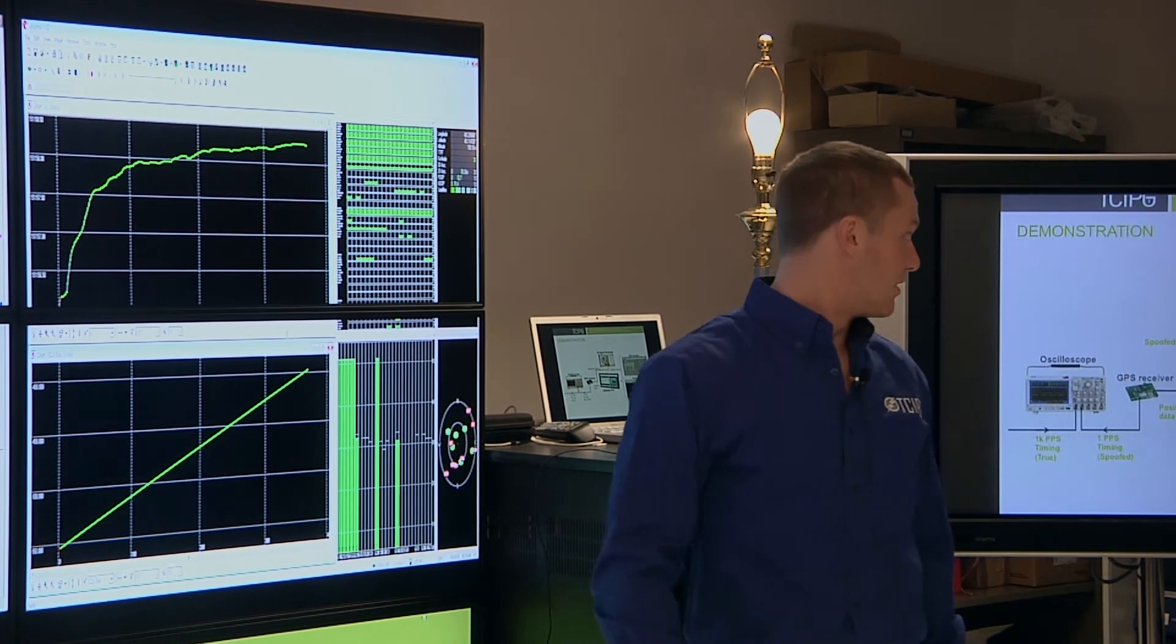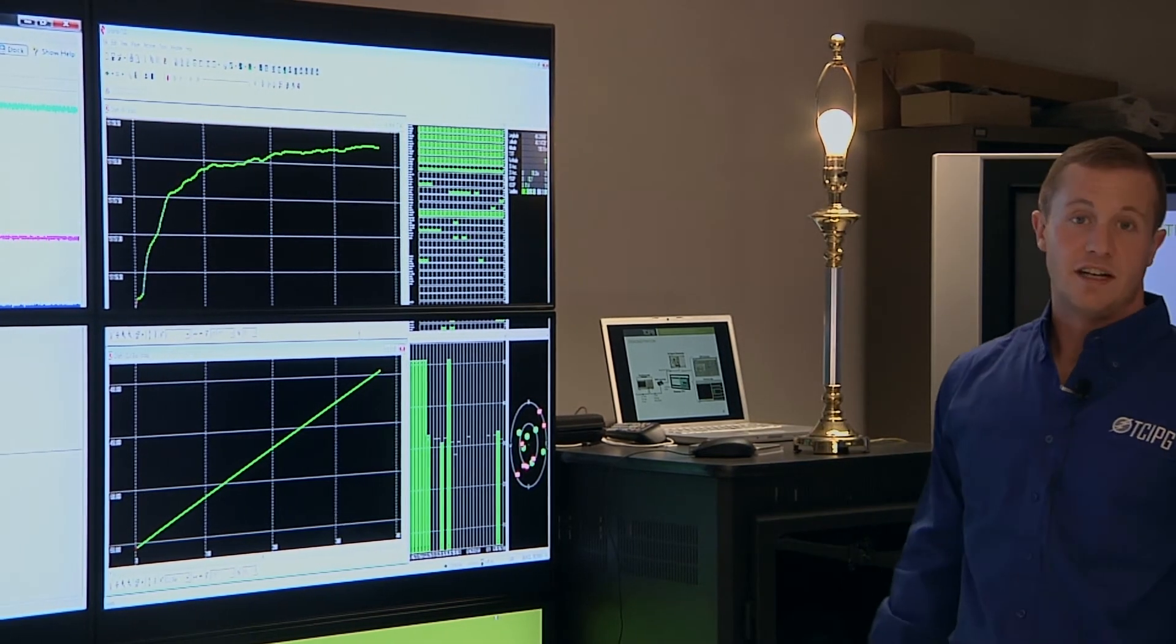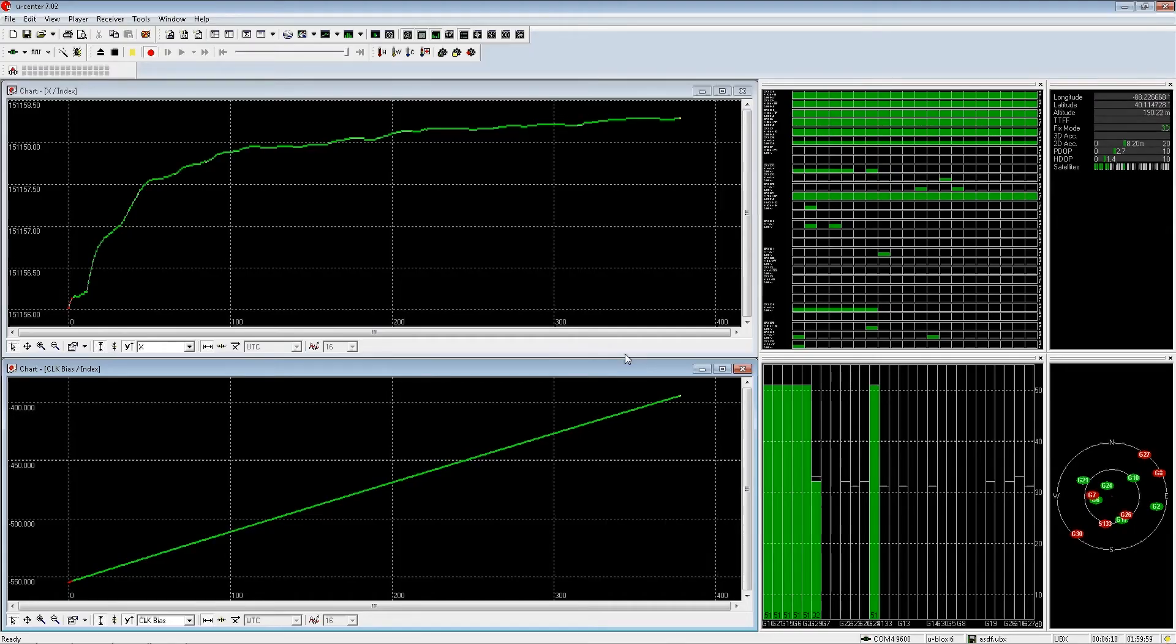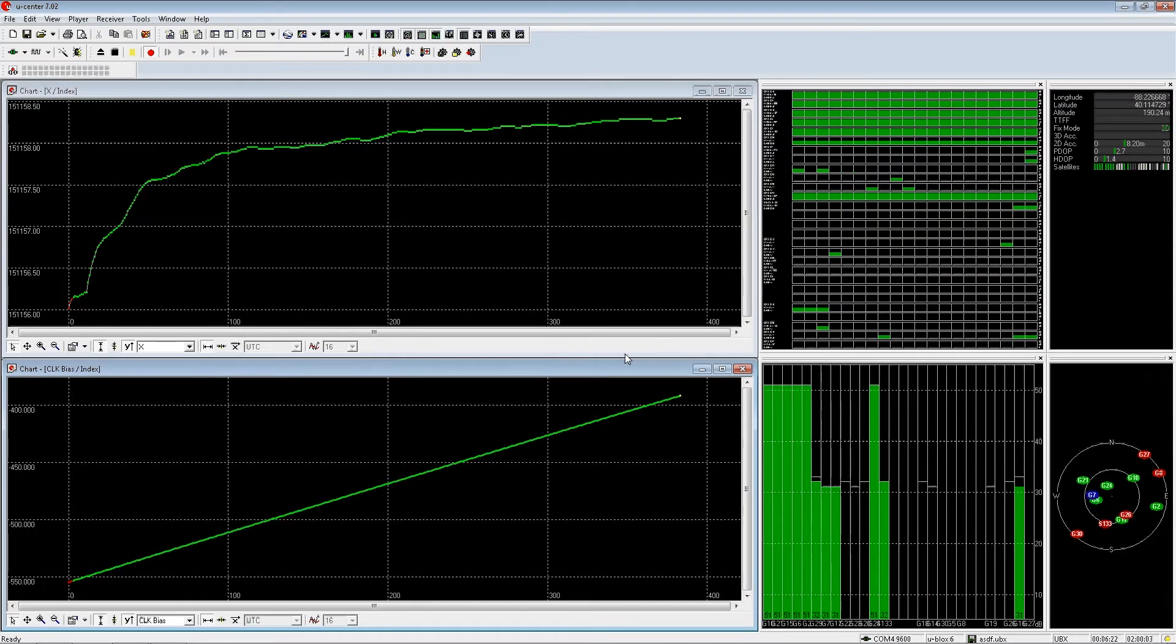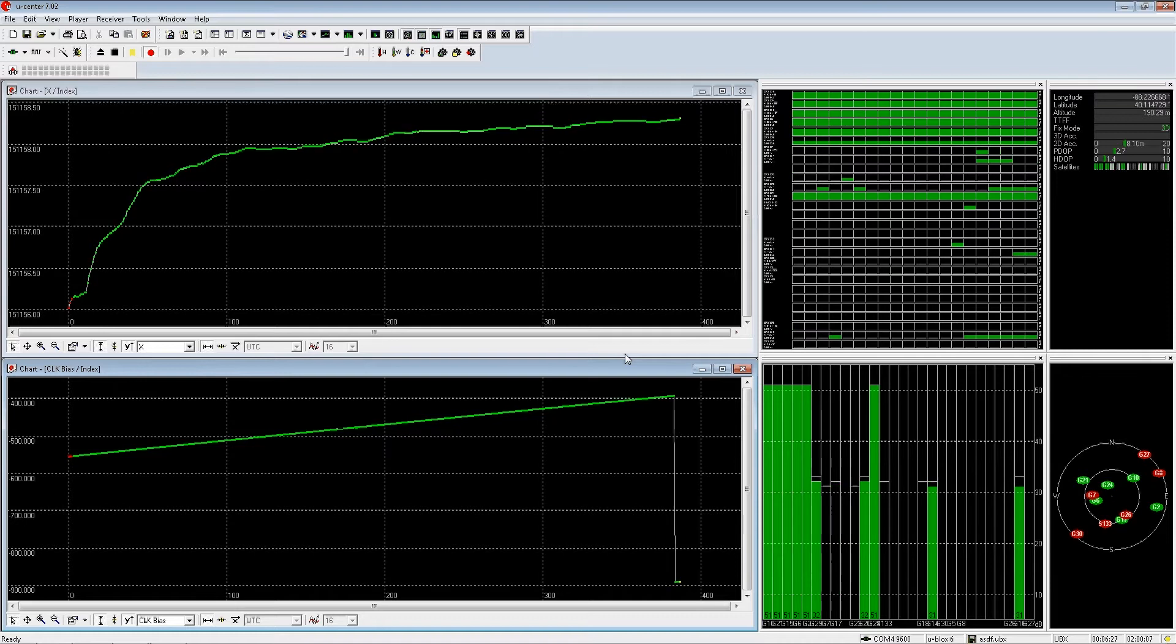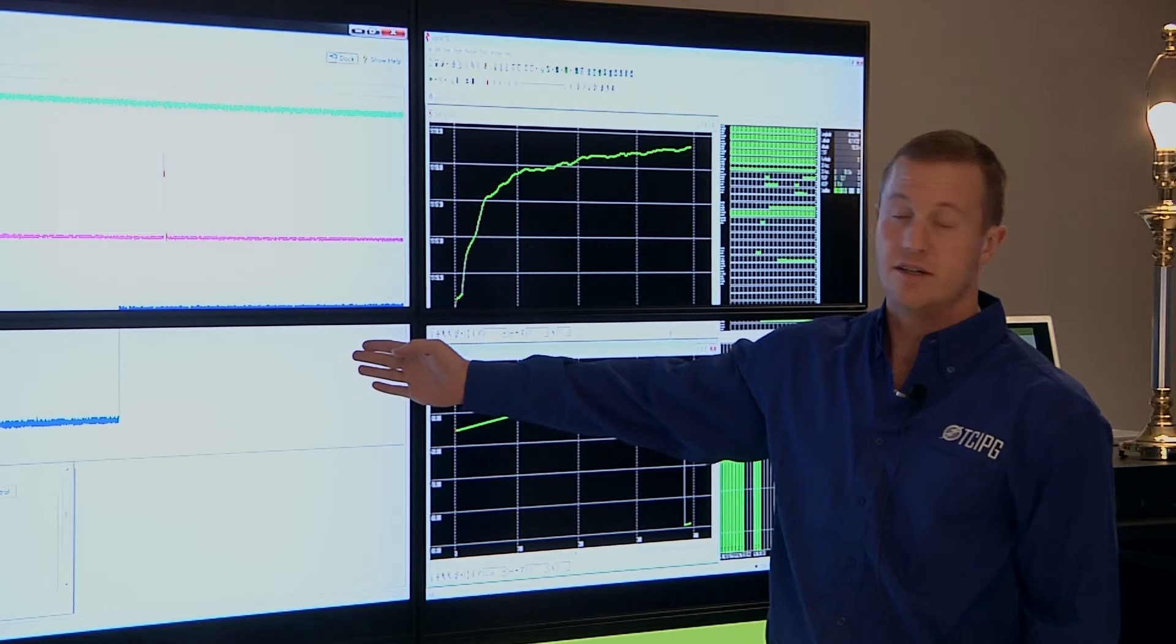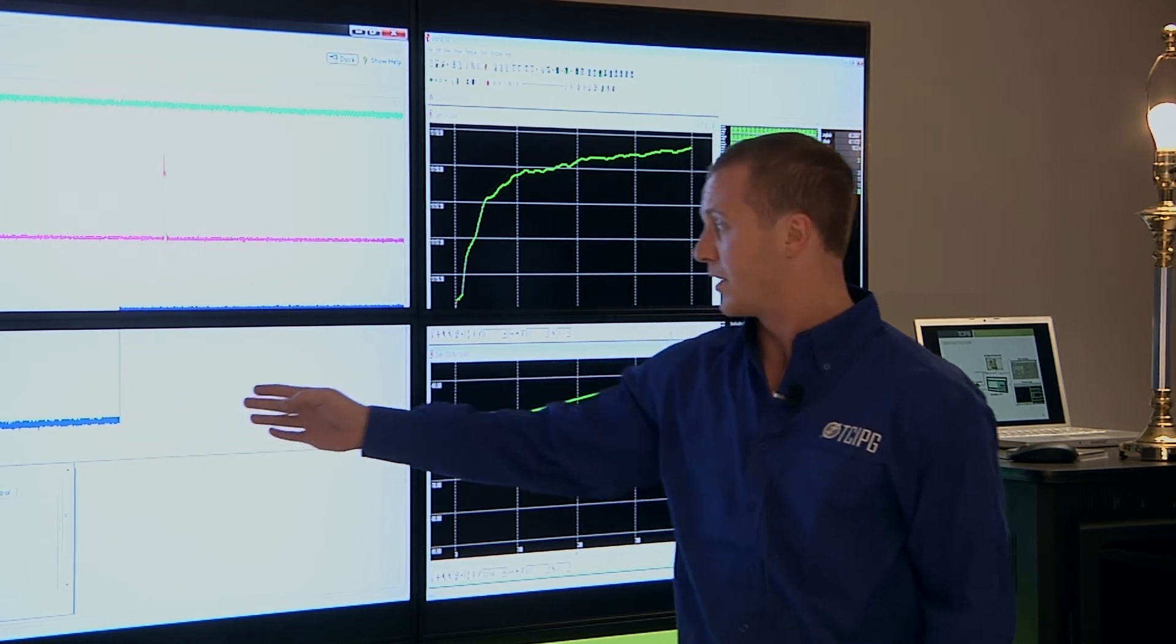So I'm expecting the change in data values to go into effect any second here. For this attack, we've decided, so there you go, you see it right now. You see that originally the pulse per second that we were generating was located right here, and then as our false data was implemented, it shifted by 500 microseconds.